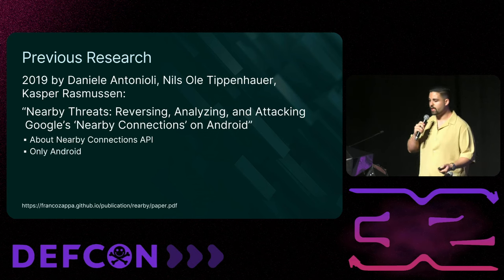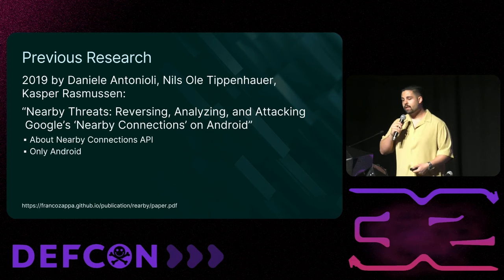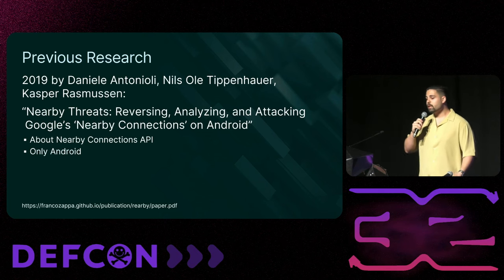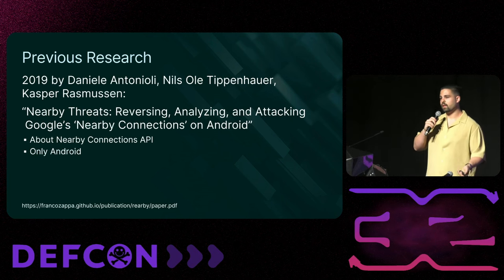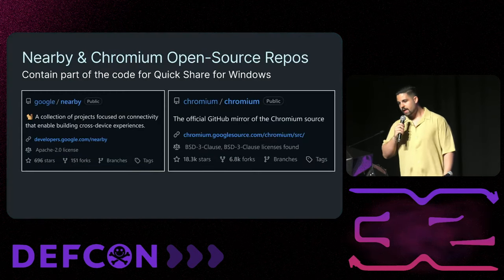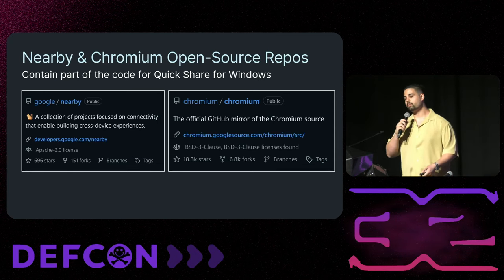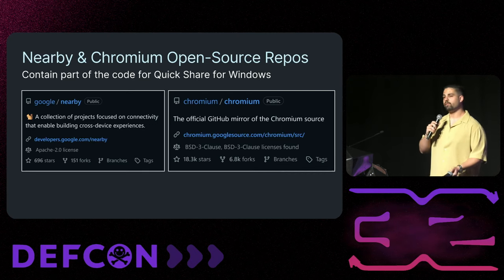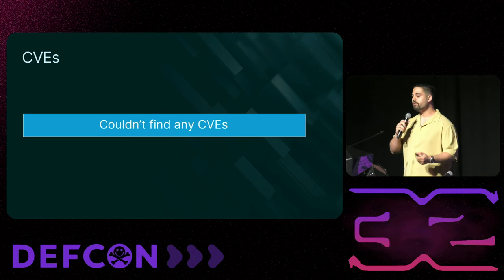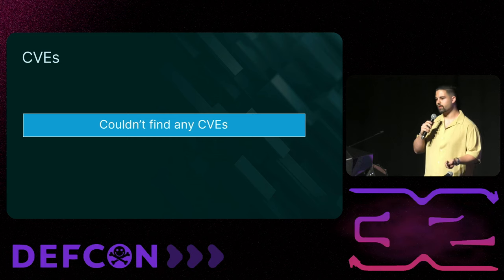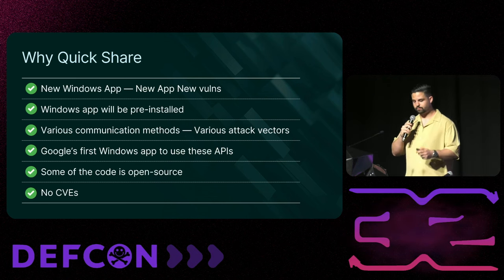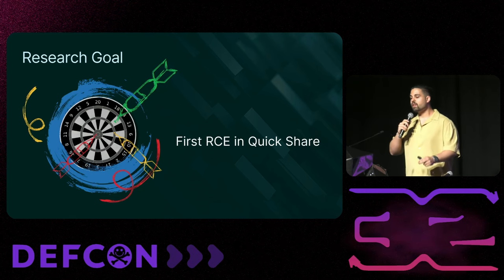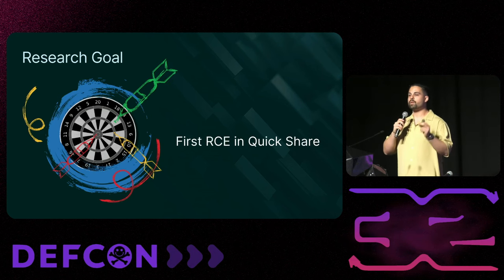Looking for past research, the only relevant one we found was called 'Nearby Threats: Reversing, Analyzing, and Attacking Google's Nearby Connections on Android,' which analyzed the Nearby Connections API used by QuickShare. The Windows app did not exist back then. Another interesting fact was that most of the application code can be found in open source repositories by Google. We also could not find any CVEs related to QuickShare. Concluding these facts together led us to evaluate QuickShare as a valuable and likely-to-be-breached target. Our final goal was to achieve remote code execution.